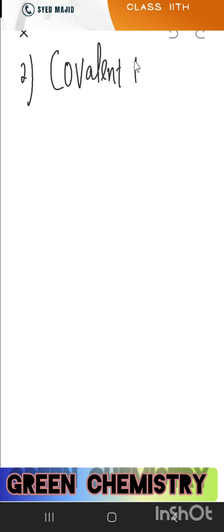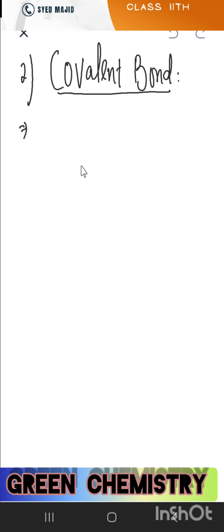Now we are starting the covalent bond. What is a covalent bond? As I told you in the last slide, when atoms combine, either they transfer electrons from one atom to another, or they do mutual sharing of electrons.